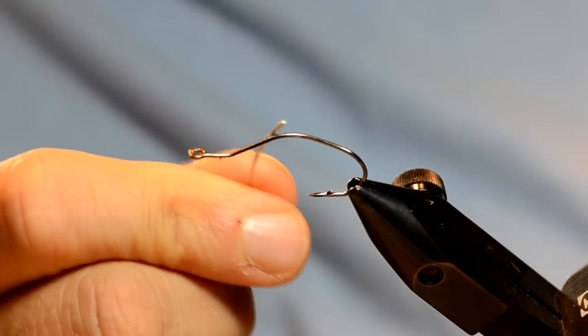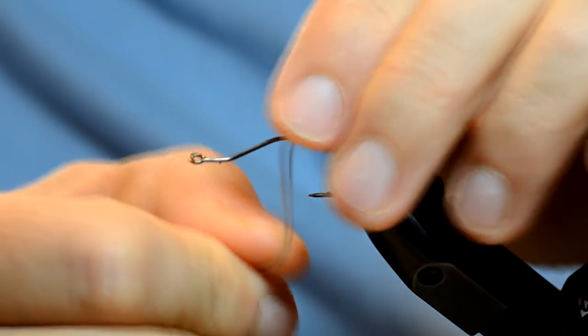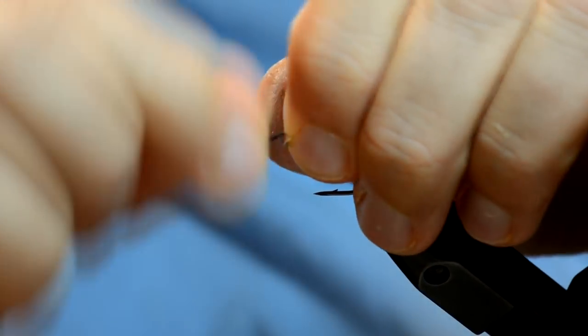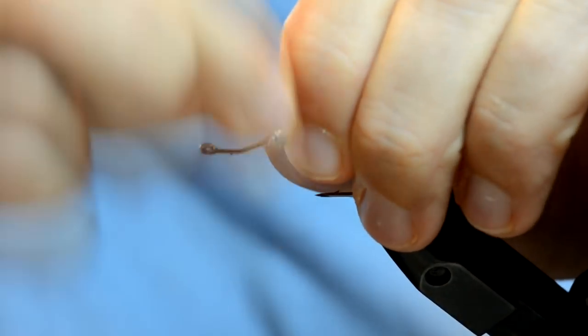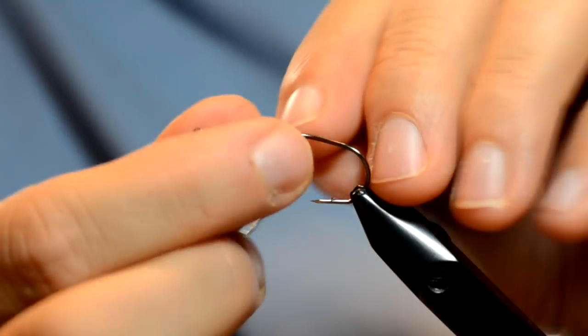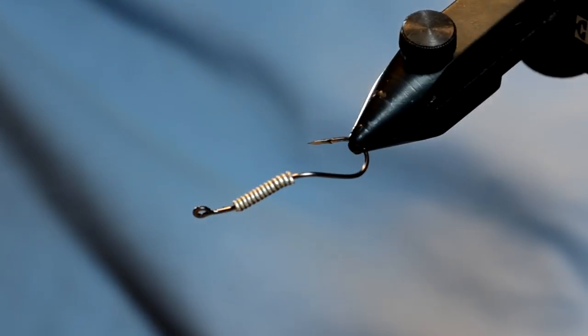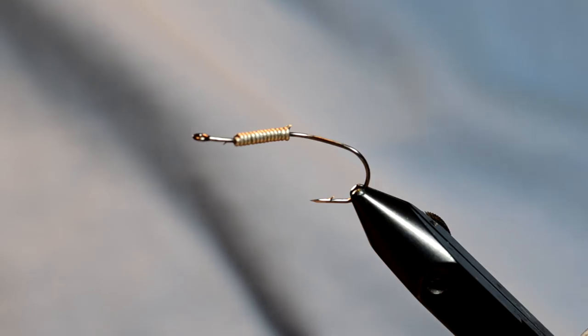So, what I'm going to do is attach some O3O lead free wire right at the bend, the first little notch here, and I'm going to work my way up to just before the eye. Okay, once I've got that, you'll notice I just got that whole section full and weighted.